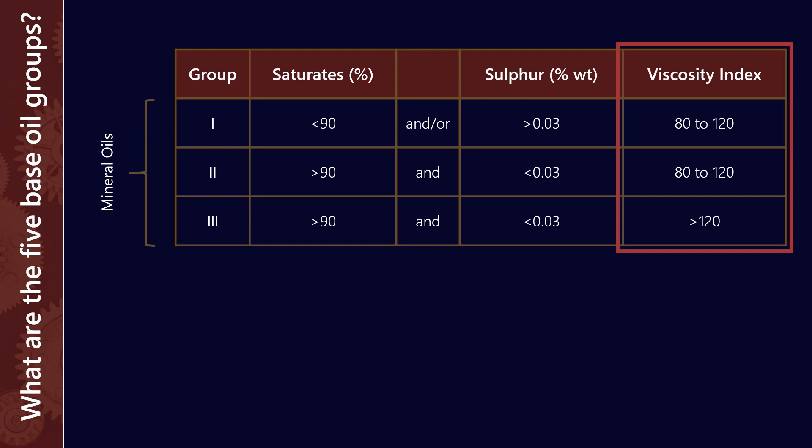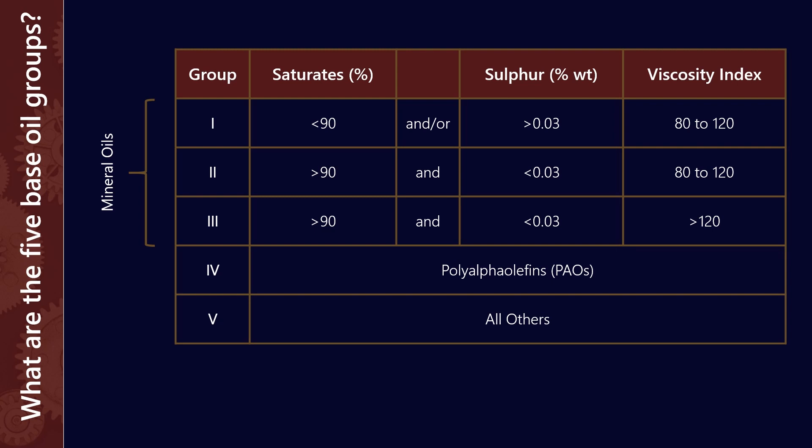So that's the mineral oils, group 1 through 3. Below those, we've also got group 4 and group 5. Now, group 4 are all what we call the poly-alpha olefins, and they're the most common class of synthetic lubricants. And group 5 is all the others. One of the maybe misnomers is that group 5 is all synthetic. That's not entirely true. So let's explore that in a little bit more detail.